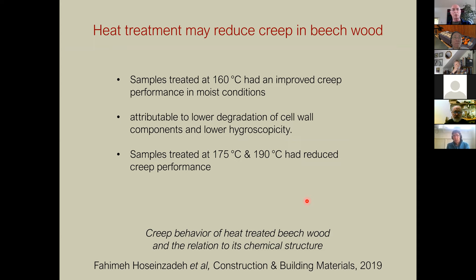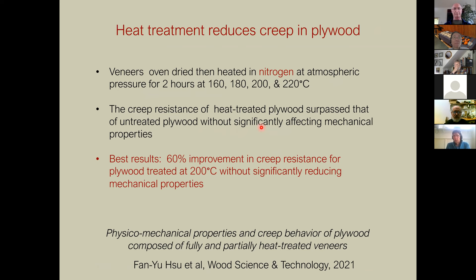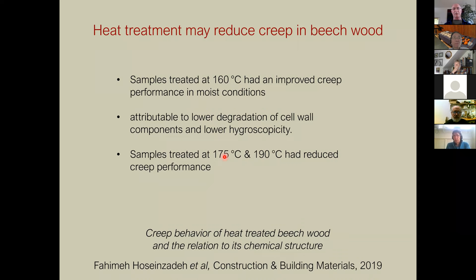Heat treatment can be used to reduce creep in wood. In one study, beech wood samples were simply oven-treated at 160°C, 175°C, and 190°C. At lower temperatures the cell walls hadn't degraded much, but moisture susceptibility was reduced, improving creep resistance. At higher temperatures the cell walls degraded more significantly.